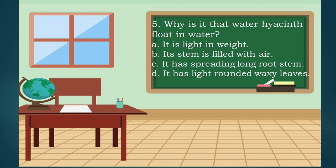Question 5: Why is it that water hyacinths float in water? A. It is light in weight, B. Its stem is filled with air, C. It has a spreading long root stem, D. It has light rounded waxy leaves. The correct answer is B — its stem is filled with air.